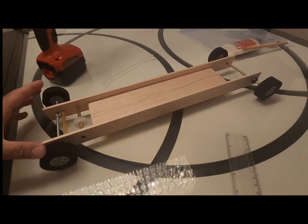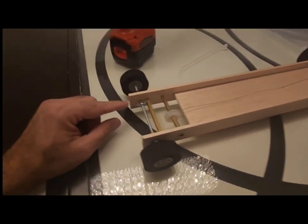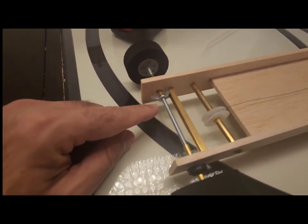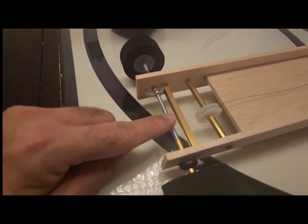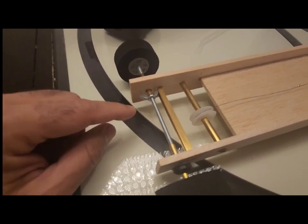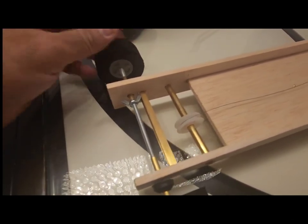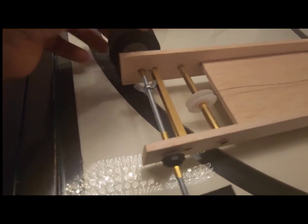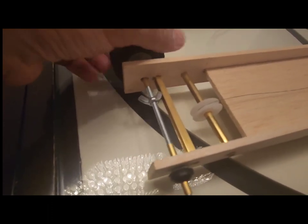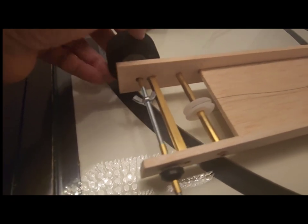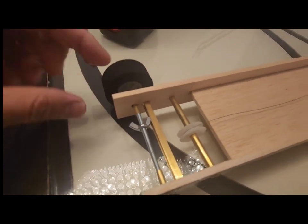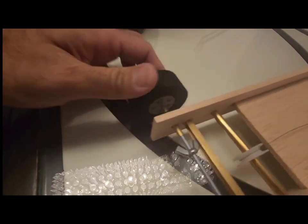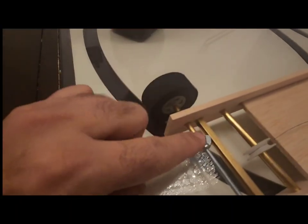We can also use the wing nut as brakes or a stopper. In case the vehicle has to stop at a certain length, we can adjust the wing nut either towards the center of the threaded axle or towards the other end. When the vehicle is moving, if the wing nut comes to one end of this axle, the wheel stops.